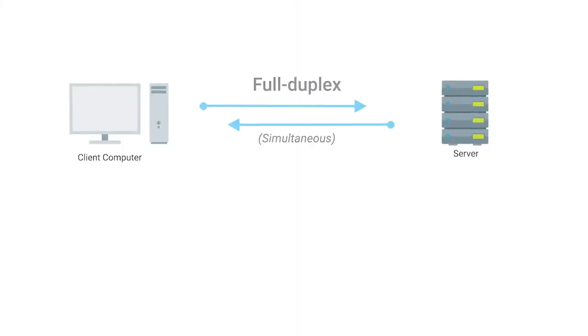Devices on either side of a networking link can both communicate with each other at the exact same time. This is known as full duplex.